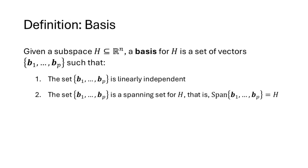So when we have a subspace H of R^n, a basis for H is a set of vectors b1 through bp that has these two properties: that set must be linearly independent, and that set must be a spanning set for H — in other words, when we form the span of the b vectors, we get H.